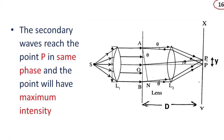The secondary waves reach the point P in the same phase, and the point will have maximum intensity. There is no phase change — that means all waves have the same phase. So there will be maximum intensity as a result of constructive interference.